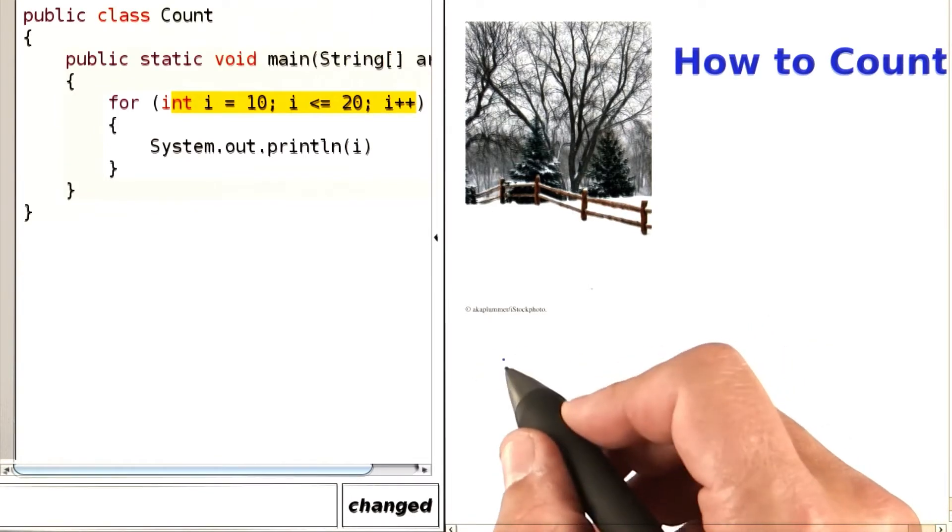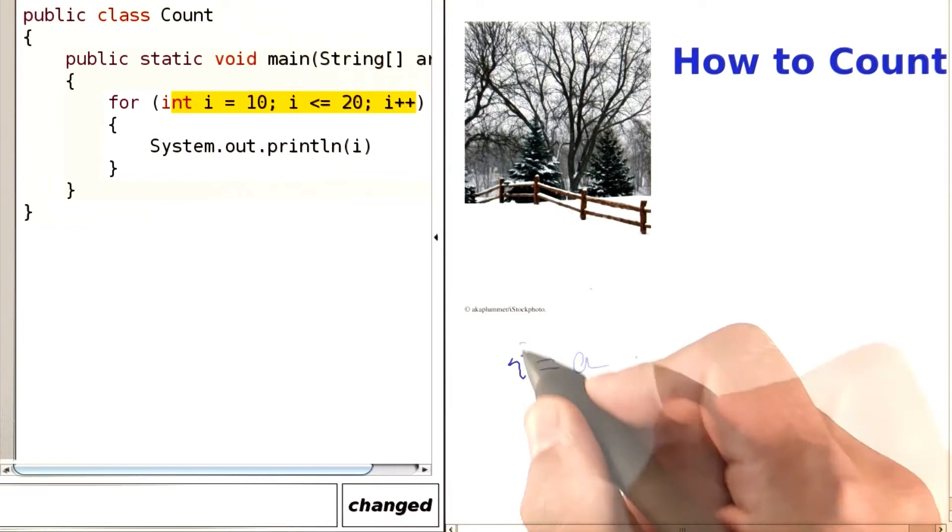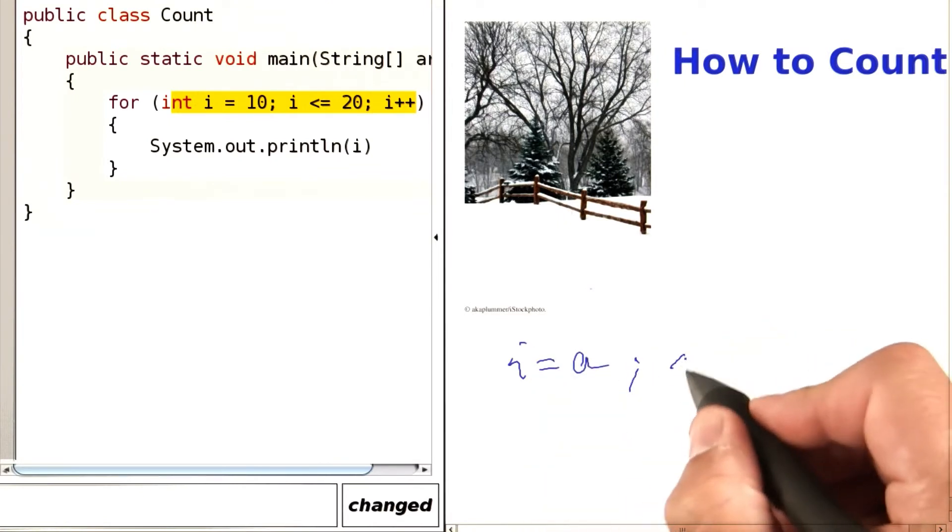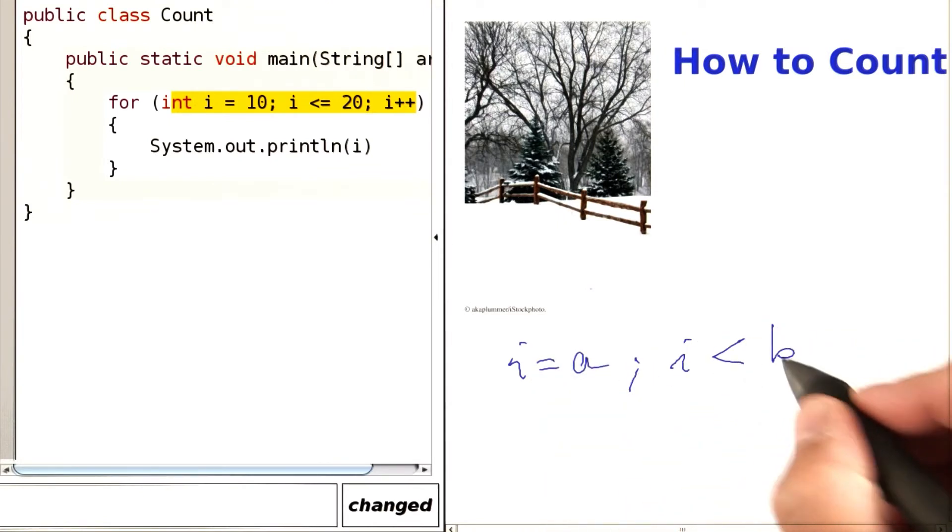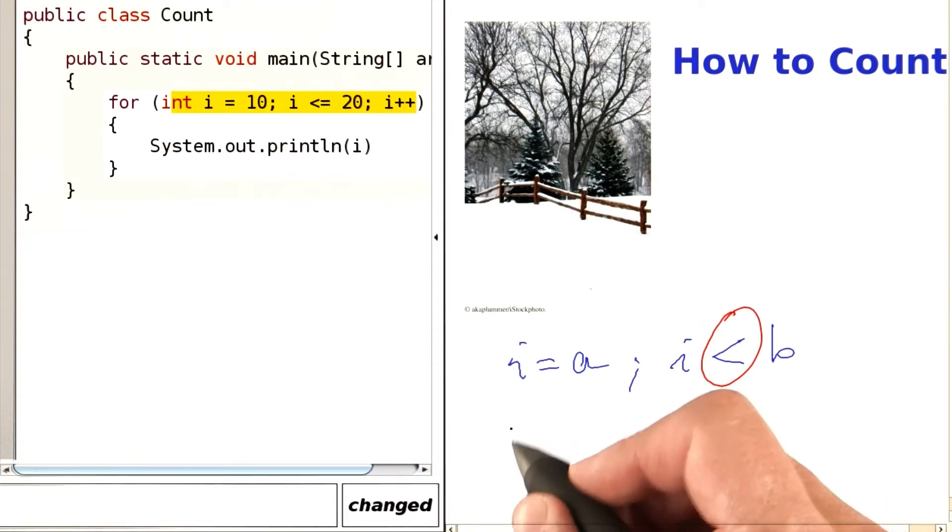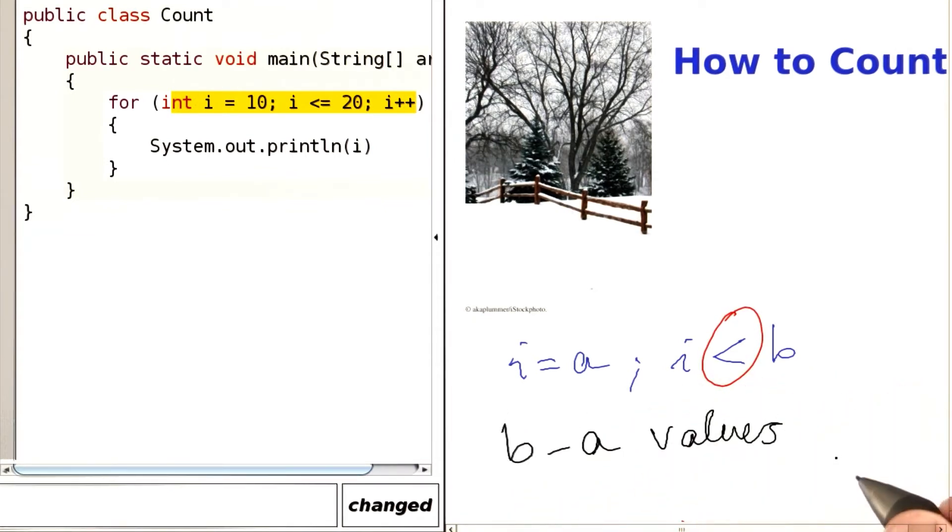What about the case when i starts at some point and then it goes less to another point? In that case, we have B minus A values.